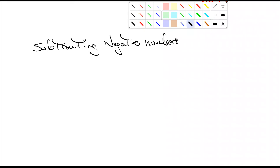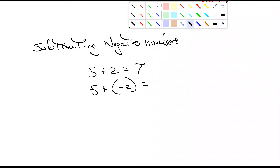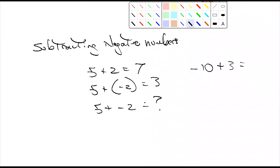Just to recap quickly: if I wrote five plus two, you all know the answer is seven. But if I wrote five plus a negative two — I always put it in parentheses so it's not confusing — somebody said it would be three. The reason we put parentheses around negative numbers is so it doesn't look like 'five plus minus two,' which makes no sense. The exception is when the negative number comes first, like negative ten plus three — no need for parentheses there.